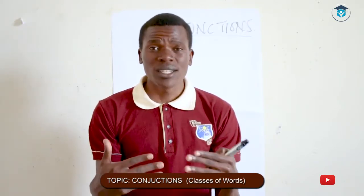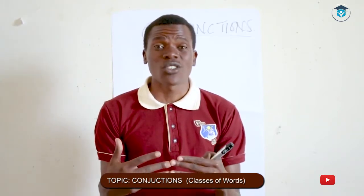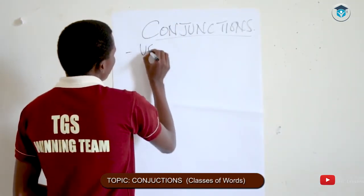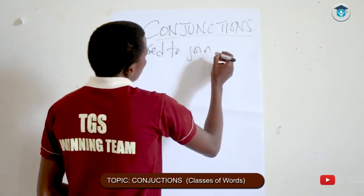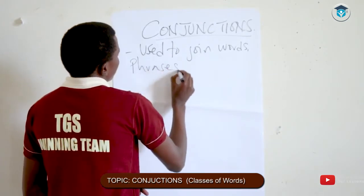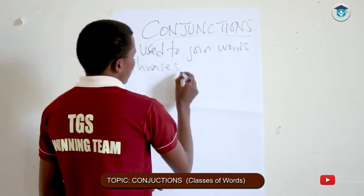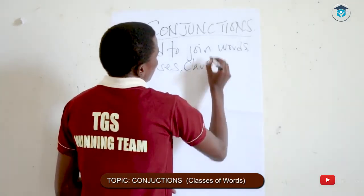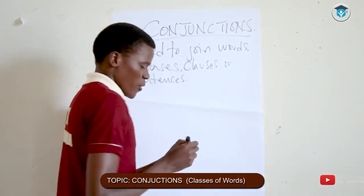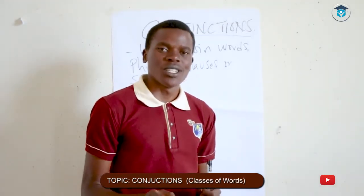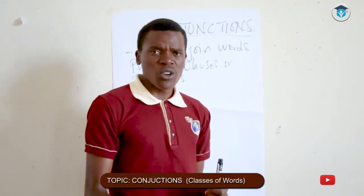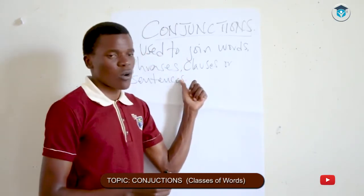A link between words, a link between sentences, a link between phrases or between clauses — that's what a conjunction does. A conjunction is used to join words, phrases, clauses, or sentences. If you are able to define a conjunction, you've gone a mile in understanding the kind of word you select to communicate effectively.